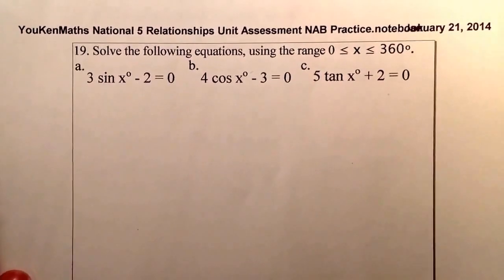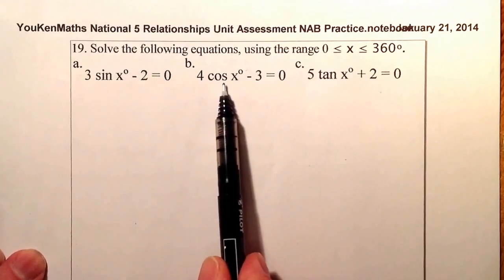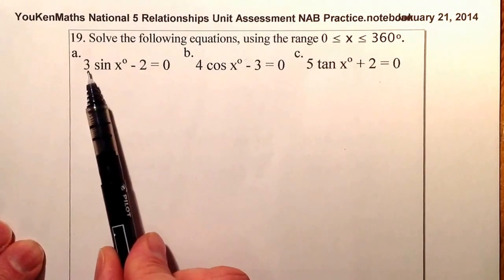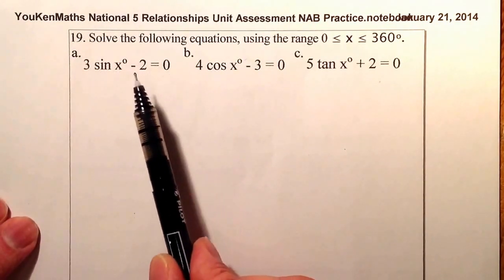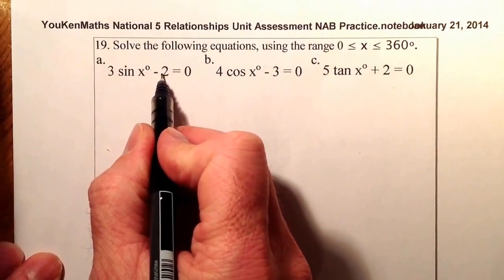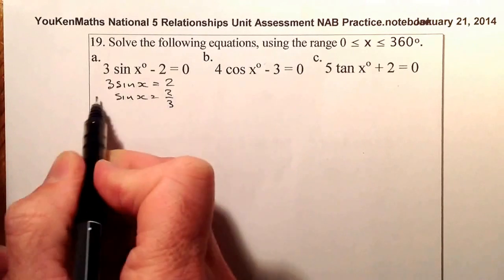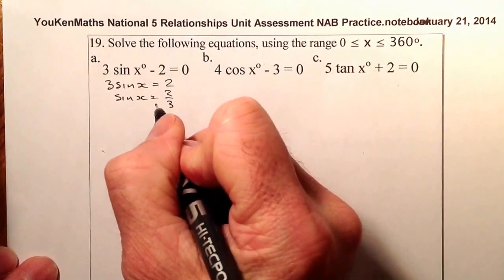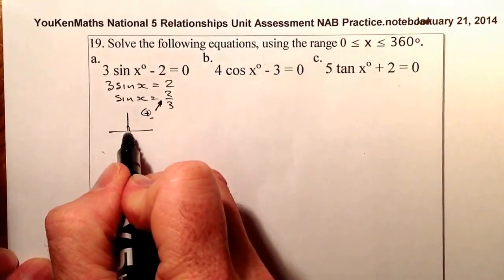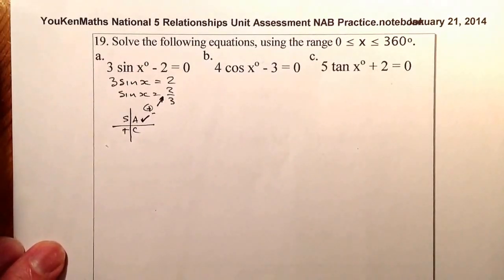Let's now move on to question 19, worth three marks. We're going to solve trig equations with the range between 0 and 360 degrees. First, I'll get sine x on its own: taking minus 2 over to the other side gives 3 sin x equals 2, then dividing by 3 gives sin x equals 2/3. The value 2/3 is positive, so I think about where it appears on the CAST diagram — sine is positive in quadrants 1 and 2.